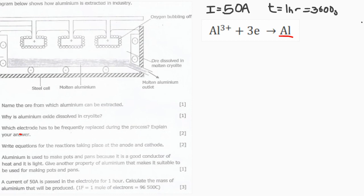First, let's calculate the charge. Charge is equal to current times time, and the current is 50 amps and the time is 3600 seconds. When we multiply the two numbers we get 180,000 coulombs.